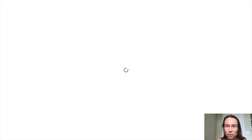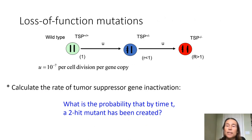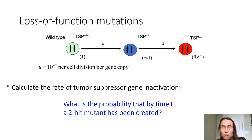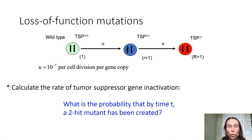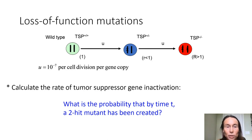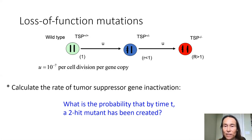Mathematically, these are very different processes and they have been studied widely. One important question is to calculate the rate of tumor suppressor gene inactivation — it's a two-step process. How quickly do we expect something like this to happen in a small compartment of cellular tissue? We always start with a wild type cell and mutations happen very infrequently: the mutation rate is in this case 10 to the minus seven per cell division per gene copy. This very rare event gives rise to a one-hit mutant, and then those have to give rise to two-hit mutants.